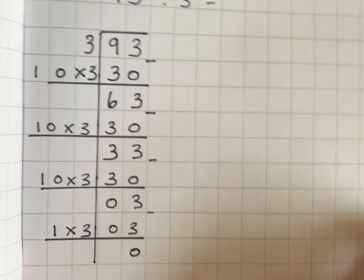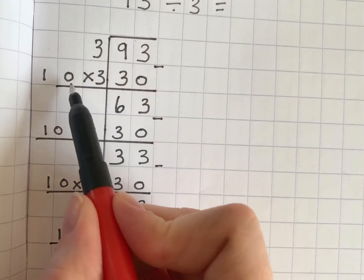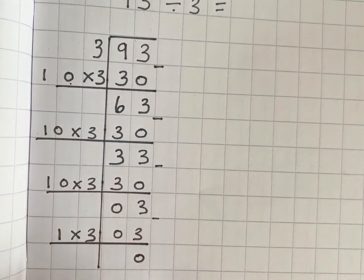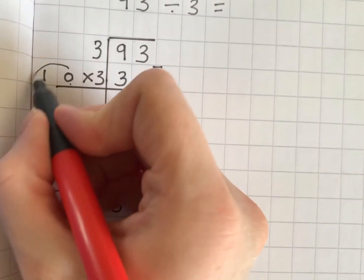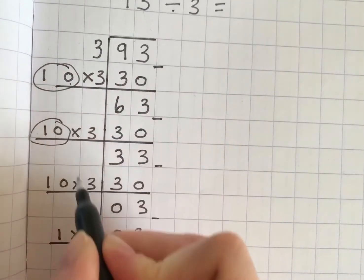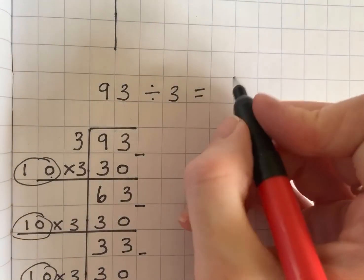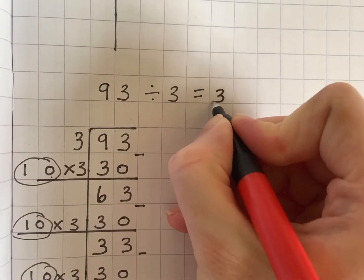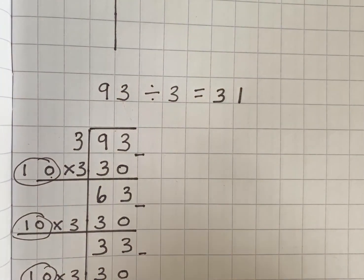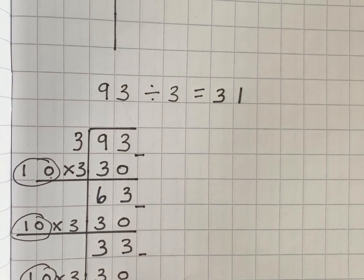3 take away 3 leaves you with 0 and then you need to count up how many groups of 3. So I've got 10, 20, 30, 31. So 93 divided by 3 leaves you with 31. Okay on to the next.